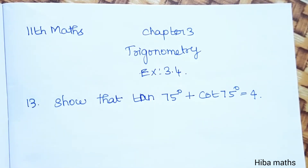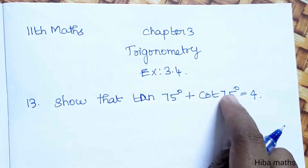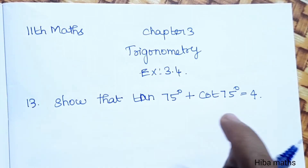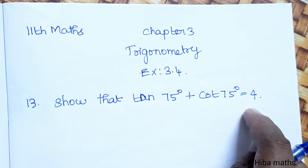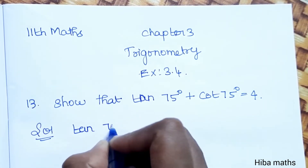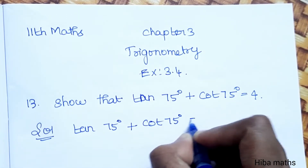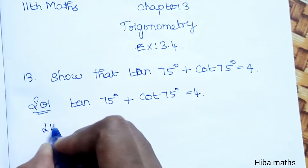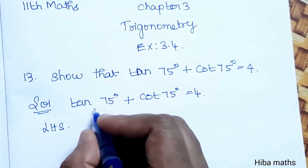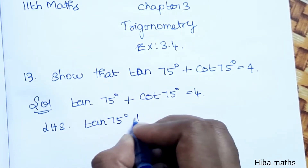Hello students, welcome to EBA Max 11th standard. This is Chapter 3 Trigonometry, Exercise 3.4, 13th question. Show that tan 75° + cot 75° is equal to 4. We need to prove that the left-hand side equals 4.